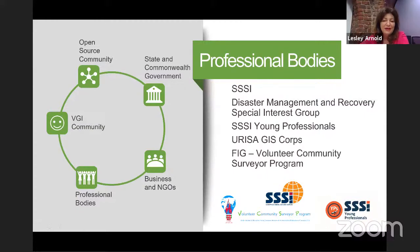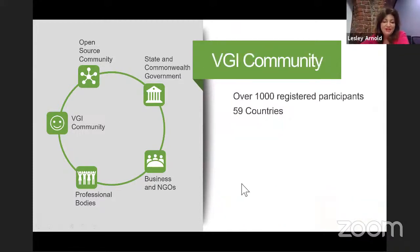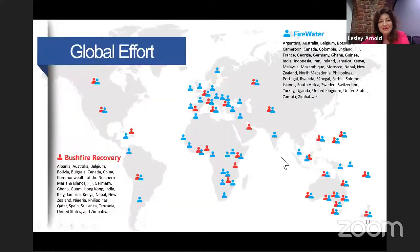Within the SSSI, we have a Disaster Management and Recovery Special Interest Group. One thing this group is doing is organising and running these mapathon events. We're also looking at a bigger-picture volunteer effort for our members and GIS professionals, looking at overseas and development opportunities for volunteers. The SSSI Young Volunteers, Eurisa GIS Corps and the FIG volunteer community are all bringing people on to contribute and collect data. Between the mapathons, we've had over a thousand registered across 59 countries.